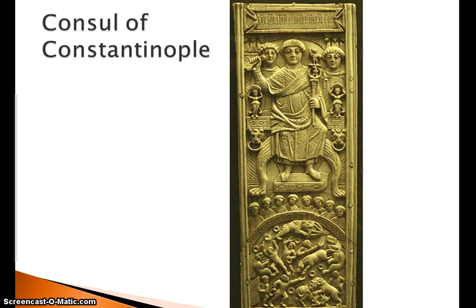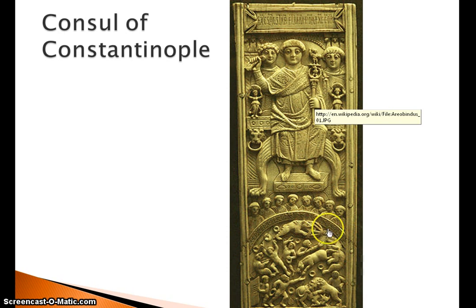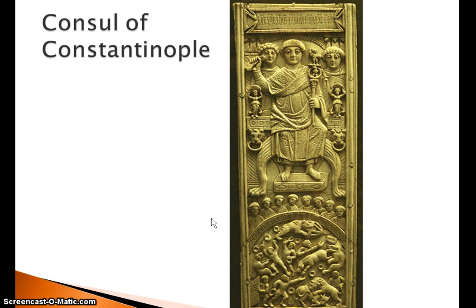Next up, we have a relief depicting the consul of Constantinople. Byzantines see themselves as Romans — they're just in a different location. Consuls were typically in charge of the military and later became almost advisors of the emperor. Here you have the consul seated on the throne with his associates behind him. Below him is some sort of gladiatorial coliseum-like structure where people are looking on and a group of men fighting different animals — they would bring in wild animals from all corners of the globe to entertain the masses. This is largely an imperial relief; it doesn't denote Christianity at all.